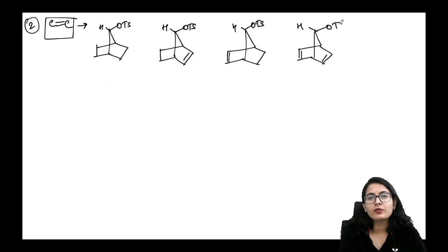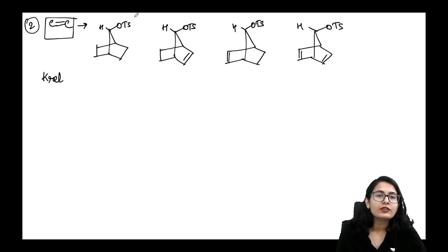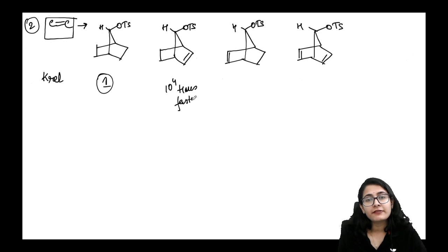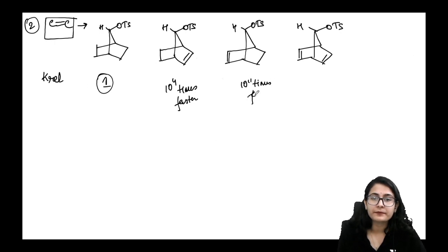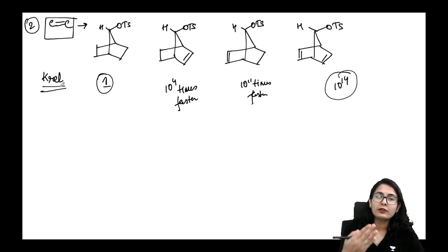Looking at relative rates of solvolysis — whether hydrolysis, methanolysis, or acetolysis, it doesn't depend on the nucleophile. Taking molecule 1 as relative rate = 1: molecule 2 is 10⁴ times faster, molecule 3 is 10¹¹ times faster, and molecule 4 with two double bonds is 10¹⁴ times faster than molecule 1.